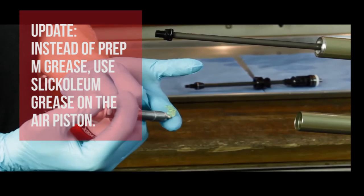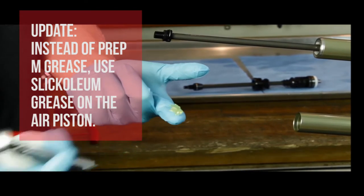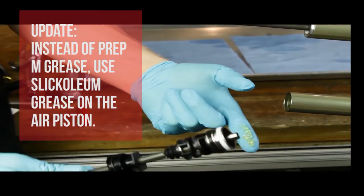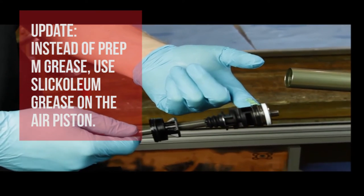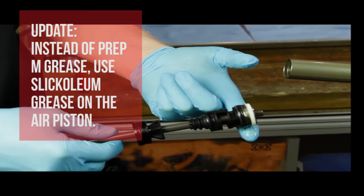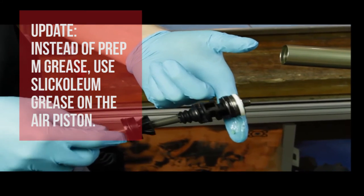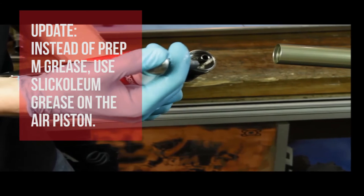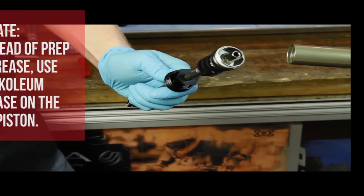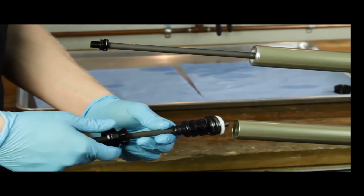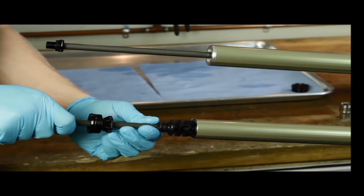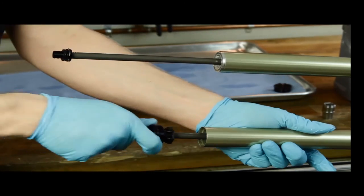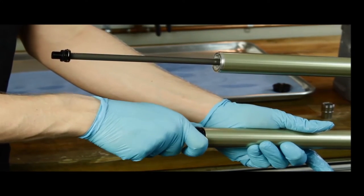Place a generous amount of M-PREP on your finger and spread it on the outer diameter of the air piston. Also put some M-PREP on the top of the piston. Use some rotational motion while reinserting the compression rod. This will ensure that you do not cut the o-ring while reinstalling the compression rod.